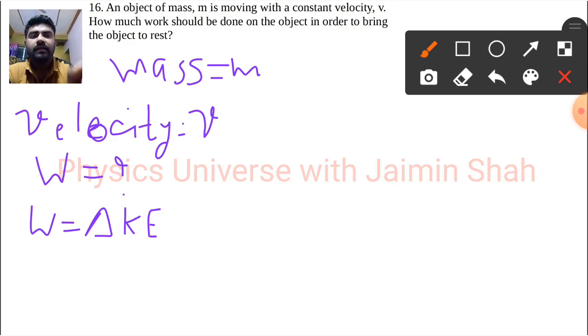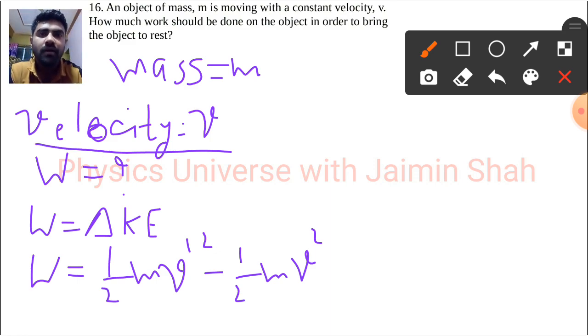The formula is final minus initial, right? Half m v dash square, that is final, minus initial half m v square. As this velocity is given, this velocity is now our initial velocity, so the object is moving with that constant velocity.